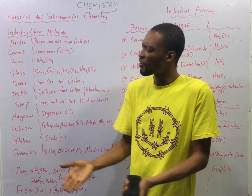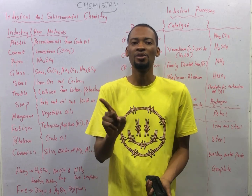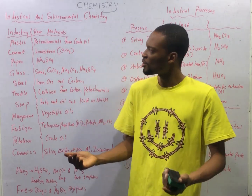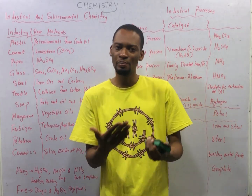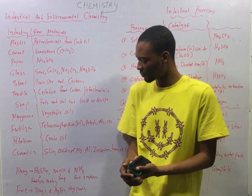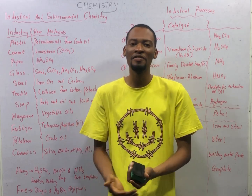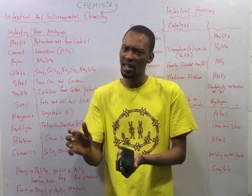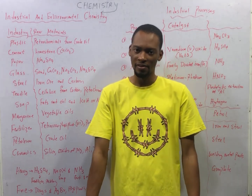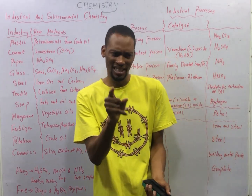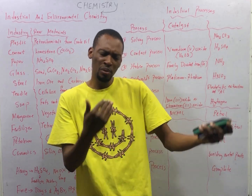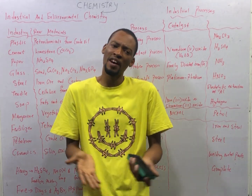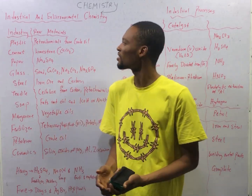Heavy chemicals are those required in large quantity in the industry. The most important heavy chemical is H₂SO₄, used to make fertilizers and also used to remove rust from metals. Sodium hydroxide is another heavy chemical used in soap making. Ammonia is another heavy chemical used for fertilizers and explosives. For fine chemicals, they are chemicals required in low quantity and purity is of high importance — they need to be very pure. Drugs and silver bromide are examples of fine chemicals.